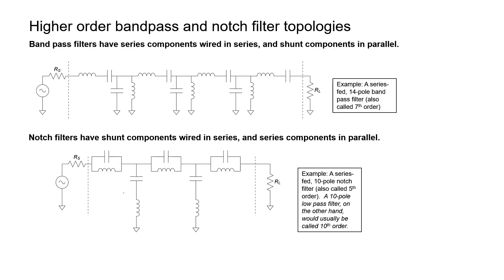For bandpass filters, we use series elements followed by shunt elements, followed by series elements, followed by shunt elements. Each series section resembles a two-pole bandpass filter, and each shunt section does too. At one special frequency, the signal makes it through — the inductor blocks high frequencies and the capacitor blocks low frequencies, so one special frequency passes through. Similarly, very low and very high frequencies get shunted to ground, but the center frequency passes over the shunt element. Counting all reactive elements gives us 14, so this is a 14-pole bandpass filter.